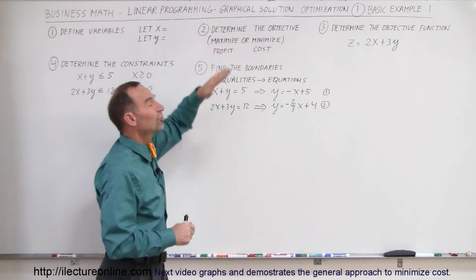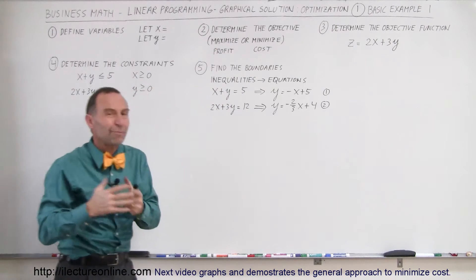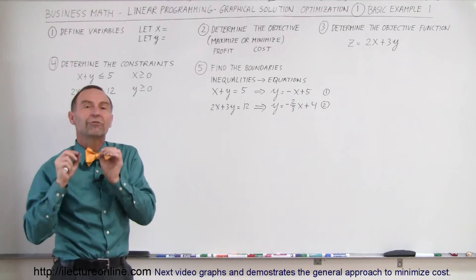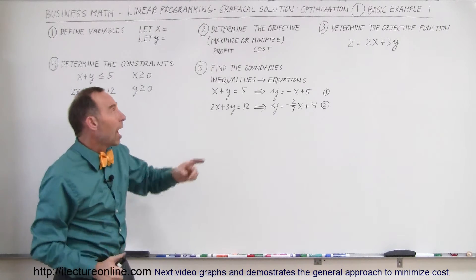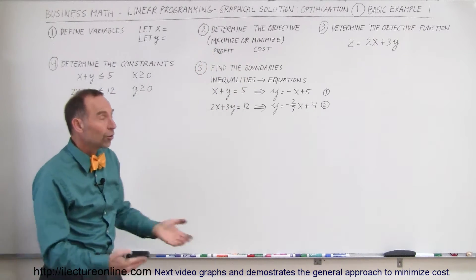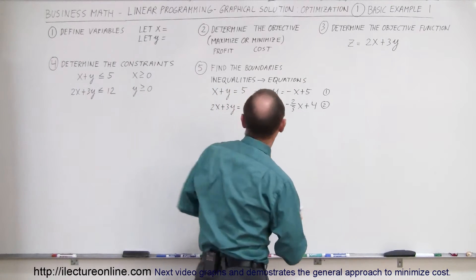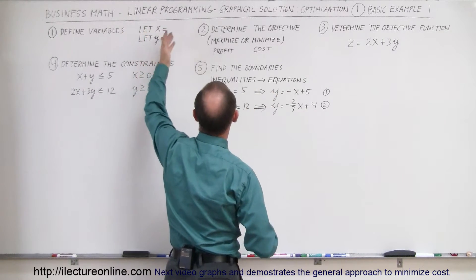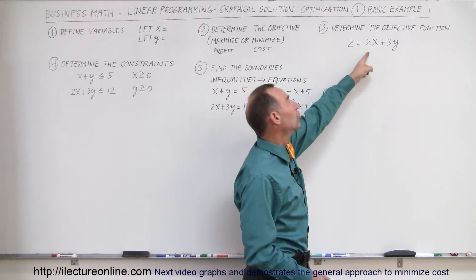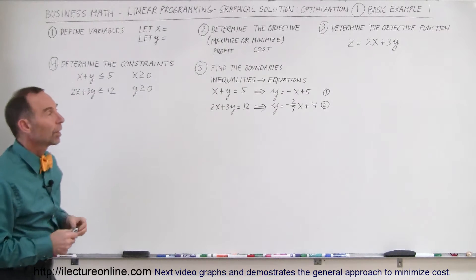The second step is to determine the objective of the problem. Typically the objective is that you're either going to maximize or minimize something — maximize the profit or minimize the cost. The third step is to determine the objective function: write in equation format how you're going to calculate the profit or cost. Here we use the variable z, and the objective function is written as z equals 2x plus 3y in this example.